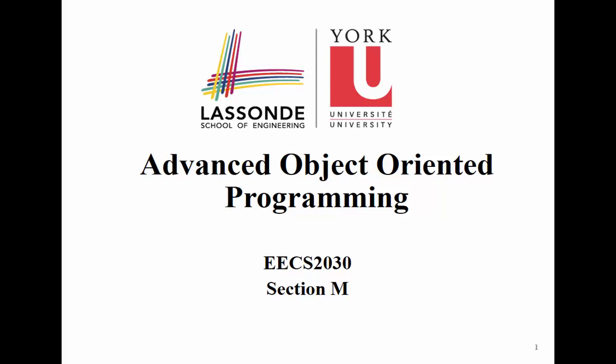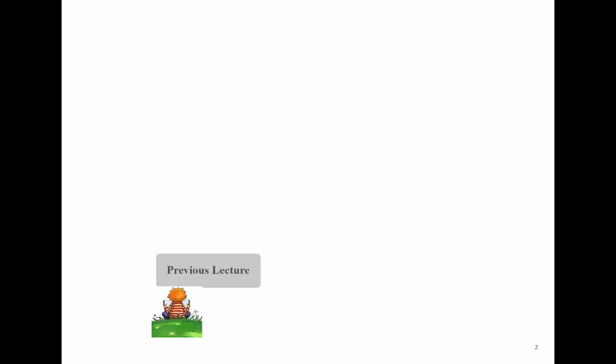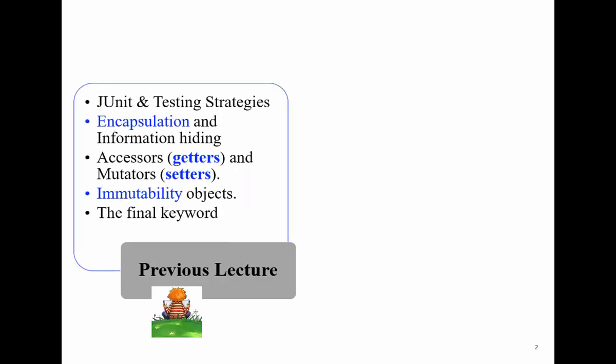We'll start our lecture with a review of what we covered last time. We covered JUnit, testing strategies, encapsulation and information hiding, and also getter and setter methods. We said we need to hide information by making attributes private, so the client will not be able to access these attributes directly. We access them using get or set methods, which are public and available for the client.